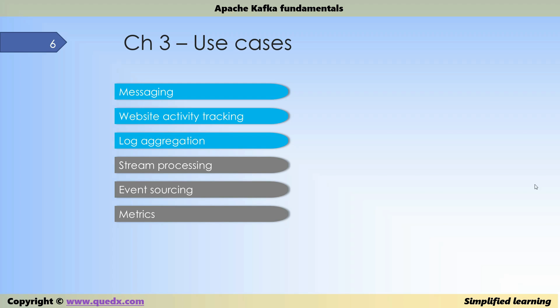Log aggregation: Kafka can be used to collect logs from distributed applications and store them in a centralized place. The data will be more structured compared to Flume or Scribe, and Kafka offers stronger durability and lower latency. Stream processing: Kafka finds good use in creating data processing pipelines where raw data is consumed and processed from topics, then published to new topics, allowing a pipeline architectural pattern.